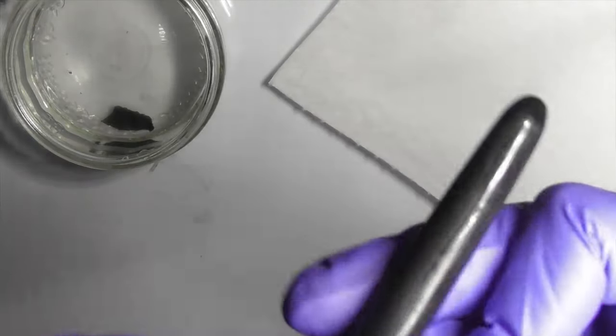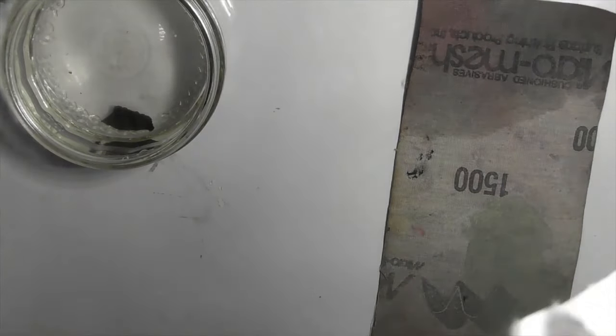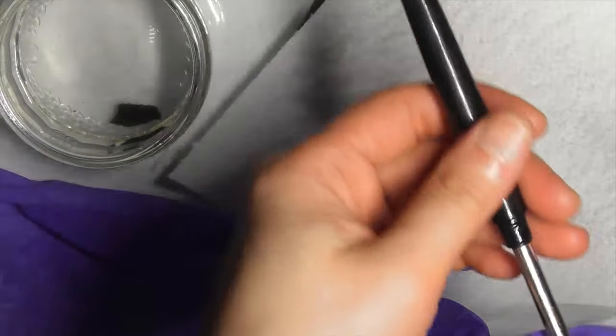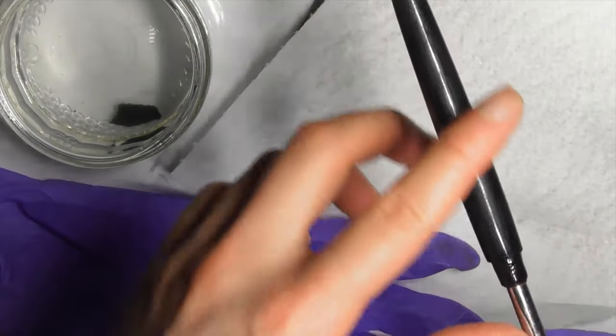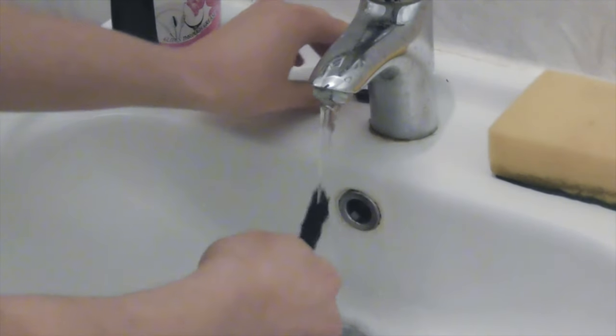Step five, wet sand the pen with 1500 grit sandpaper. Then wash it with water and allow it to dry.